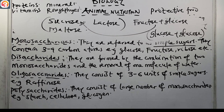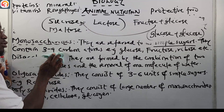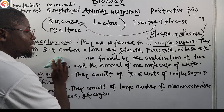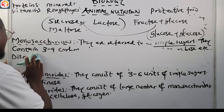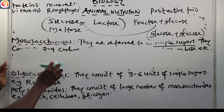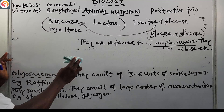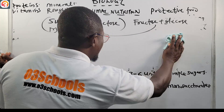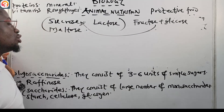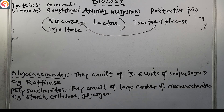The third type is oligosaccharides. These consist of three to six units of simple sugars. An example is raffinose.